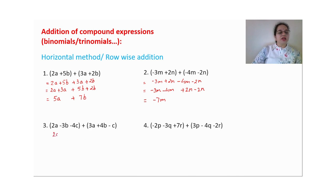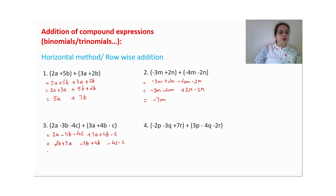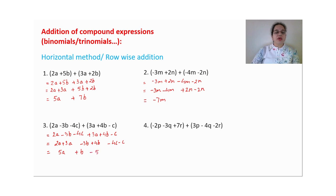We can do the same with three terms. First open the brackets: 2a minus 3b minus 4c plus 3a plus 4b minus c. The piggy bank is open — collect all like terms together. Leave a little space between groups. Then add minus 4c and minus c. Coefficients: 2 plus 3 gives 5a; minus 3 plus 4 gives plus 1b; minus 4c minus c gives minus 5c.